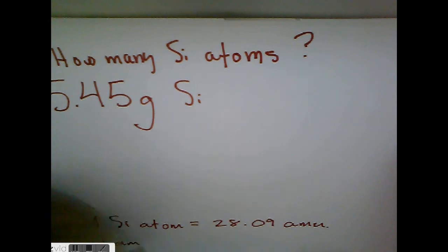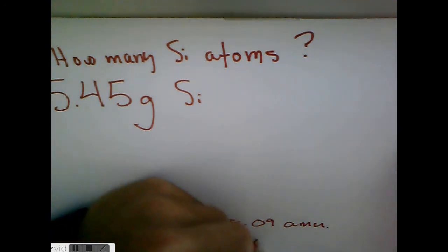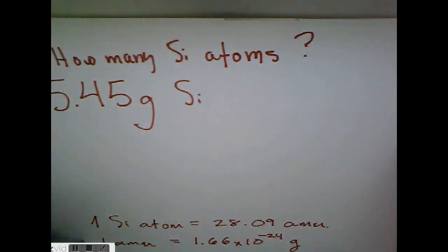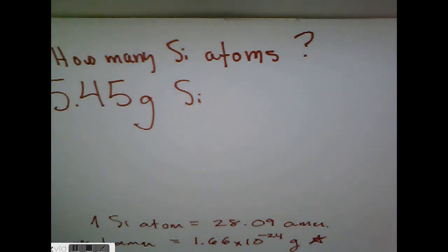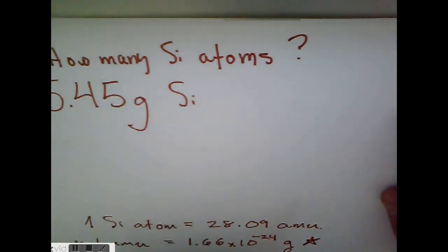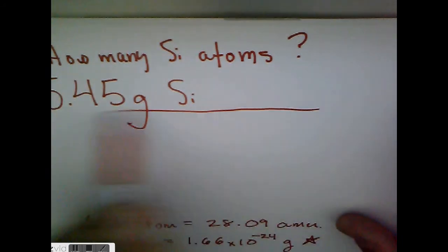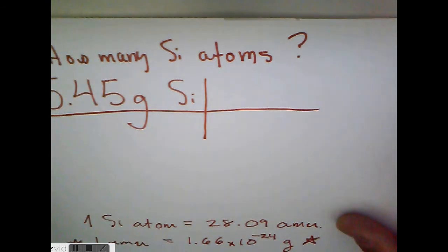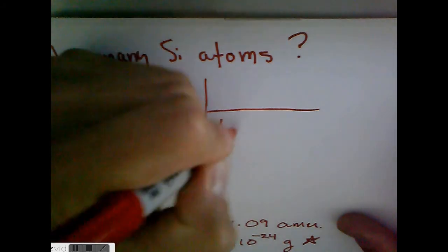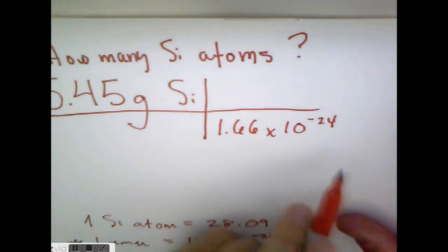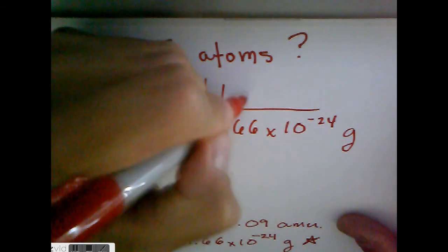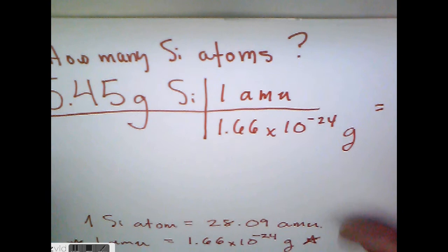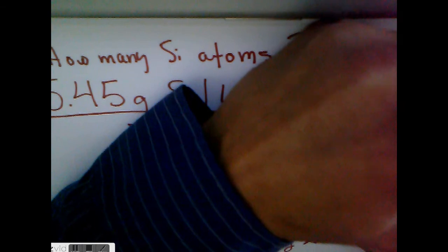You have this written down already. 1.66 times 10 — and that's in grams. So 1 AMU equals 1.66 times 10 to the negative 24 grams. This never changes — just like 1 inch equals 2.54 centimeters, or 12 inches equals 1 foot. This never changes. I'm going to put that information in here. I want grams to cancel, so I'm going to put the grams down here. So 1.66 times 10 to the negative 24 grams is equal to 1 atomic mass unit.